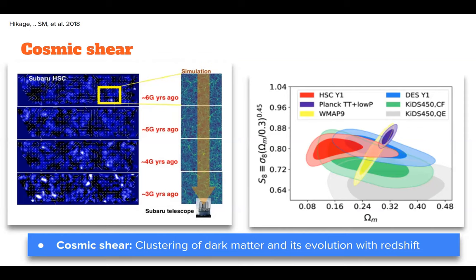The stakes are quite high because if you see a difference, it means something is breaking down in the standard model of cosmology — something is wrong between how we extrapolate results from the early universe to today. We'd like to know: is dark energy doing something strange, is it changing with time? We don't know, but we would like to find out, and one of the ways to do it is through observations.